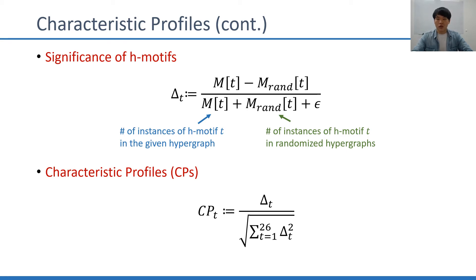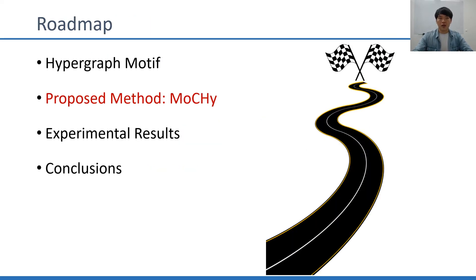To compute CPs, effective and fast counting methods of the instances of H-motifs in the given hypergraph become extremely important. Now let's move on to our algorithm, Mochi.